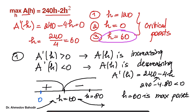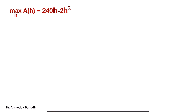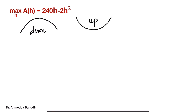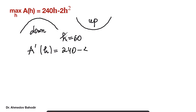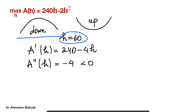The second way to identify the local maximum or minimum is to use the concavity of the function. The sign of the second derivative tells us whether the function is concave up or concave down at a particular point. The first derivative is 240 minus 4h, and the second derivative is minus 4, which is always negative. This means the function is always concave down, and at h equals 60 it is still concave down — so it is reaching its maximum at this point.